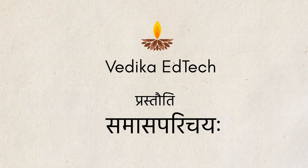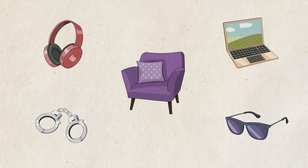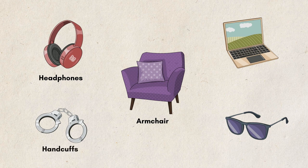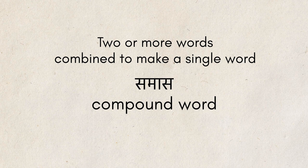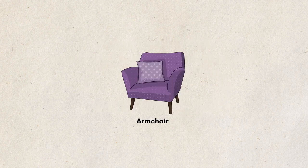Welcome to the first lesson in this video series — Samasa Parichayaha. Have a look at these words: Armchair, Headphones, Handcuffs, Laptop, Sunglasses. What is the distinguishing feature? These words are formed by combining two separate words. When two or more words are combined to make a single word, it is called a compound word, or Samasa in Sanskrit. Instead of saying 'a chair with arms,' we use a shorter form: Armchair.